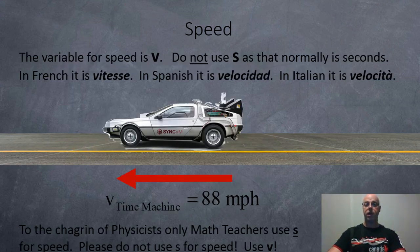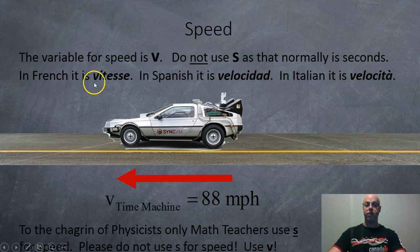And the variable for speed is V. Please do not use S as that normally means seconds, and there's a lot of seconds being used in physics. In French, speed is vitesse. In Spanish, velocity and in Italian, velocity. So V seems to be the chosen variable. Please do not use S.